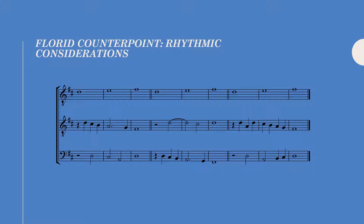Basically, in every bar, every beat needs to be marked at any given time. What do I mean by this? Let's look at bar two. We know we have four beats per bar, but notice beat two isn't marked. We have a C-sharp and an A being held out through beat two, and this isn't allowed because it kills the rhythmic vitality of the lines.